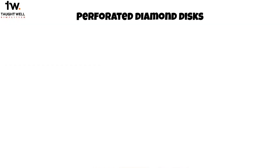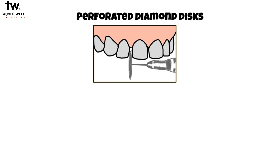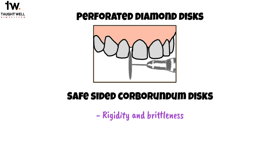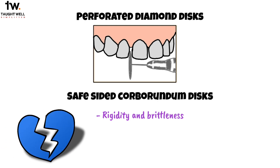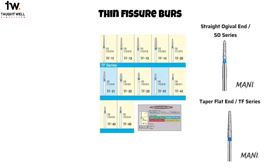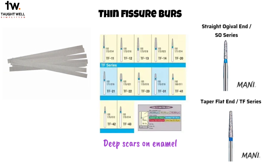Perforated diamond discs are flexible discs which are extensively used and can strip adjacent teeth. Safe-sided carborundum discs were initially used, but they have limitations due to rigidity and brittleness. They have a higher risk of breaking, potentially causing injury to patients and clinicians, and are challenging to use in the posterior region. Thin fissure burs, including straight or tapered burs, can be used for proximal stripping, but tend to leave deep scars on the enamel. Metallic abrasive strips are typically used afterward to polish the region.